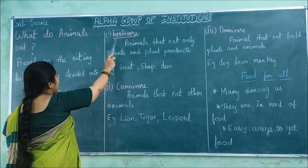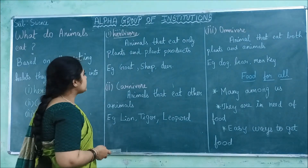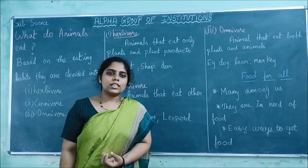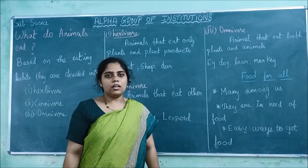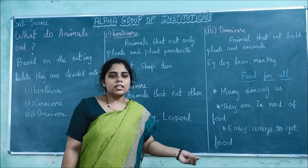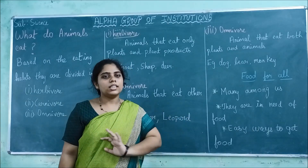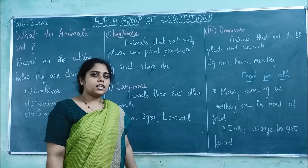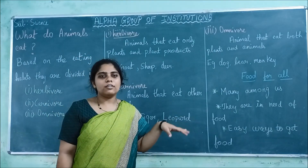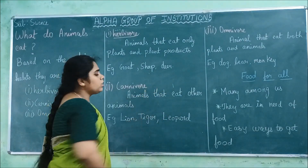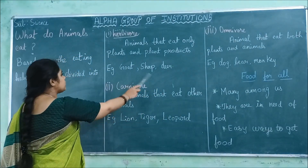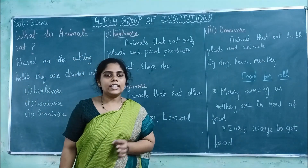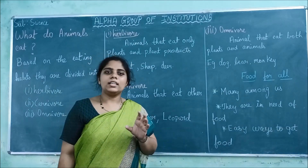Examples of herbivores are goat, sheep, and deer. Goat does not eat anything apart from plants — only plants, grass, and leaves. Sheep also eats only leaves and grasses. Deer is also a herbivore. All three animals eat only plants and plant products.